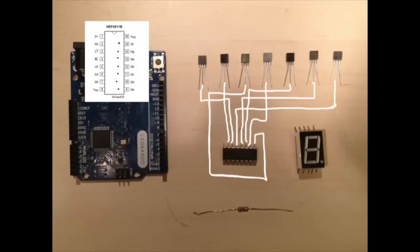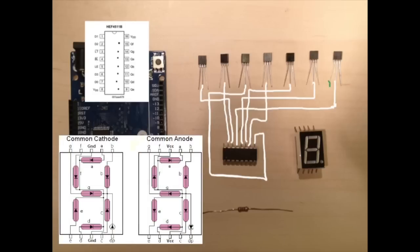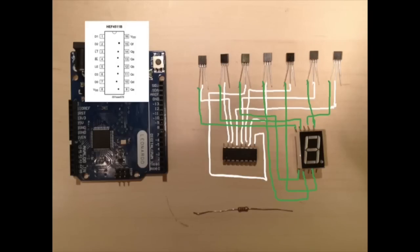Hope you followed along there. The collector is going to be connected to the respective pin on the LED display, so A goes to A, B goes to B, and so on. And finally, all the emitters are going to be connected to ground.